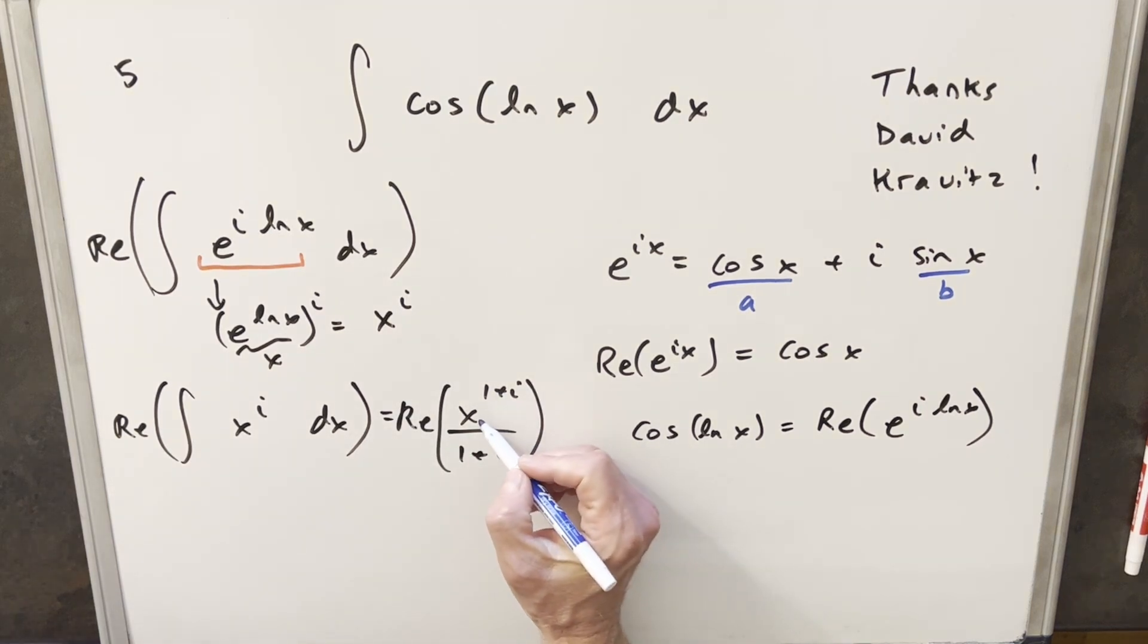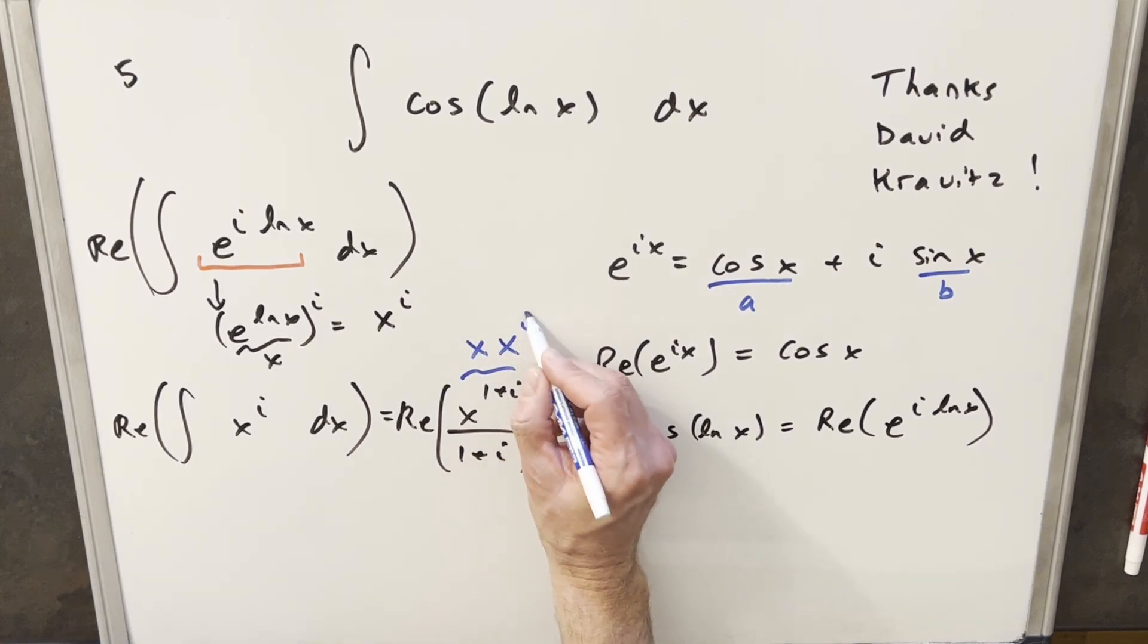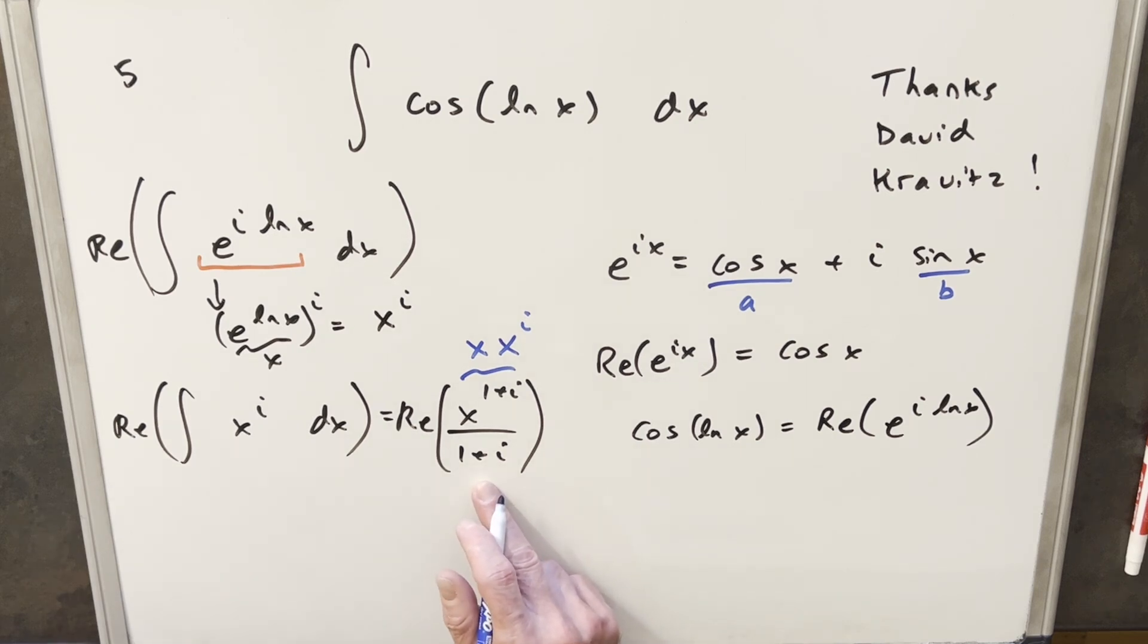But then to simplify this, x to the 1 plus i, I can rewrite that because we're adding in the exponent. I can write that as x times x to the i. And what I also want to do here is rationalize the denominator. So I can multiply by 1 minus i over 1 minus i.